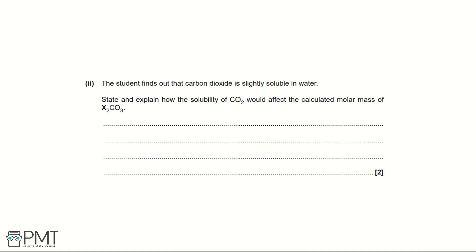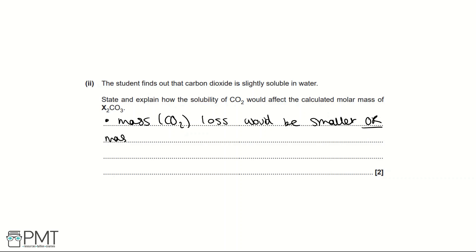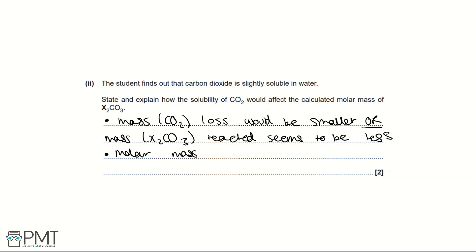Part C2: Carbon dioxide is slightly soluble in water. This means the mass of CO₂ lost from the flask would appear smaller than the actual amount produced. As a result, the mass of X₂CO₃ that appears to have reacted would also seem less, leading to a calculated molar mass that is greater than the true value. Two marks: one for mass of CO₂ lost being smaller, one for molar mass being greater.